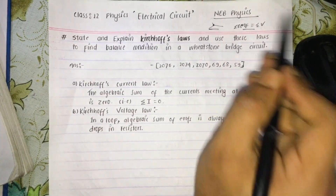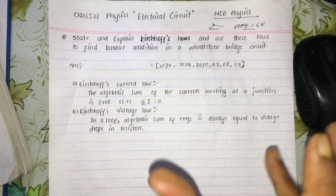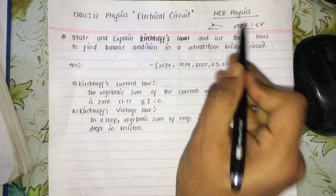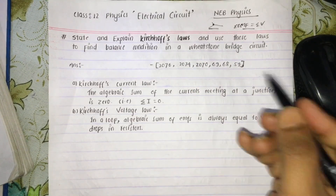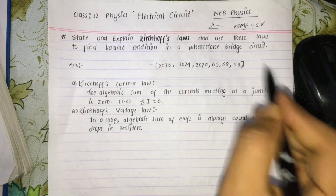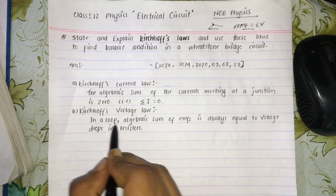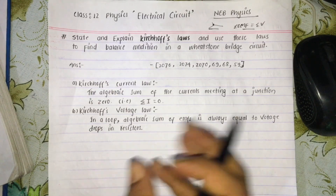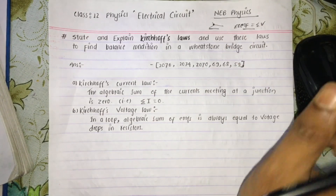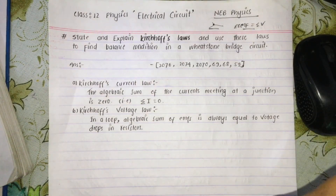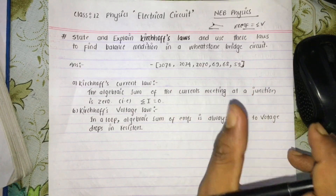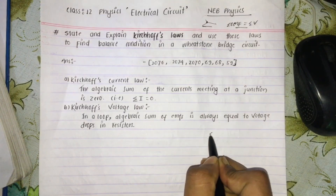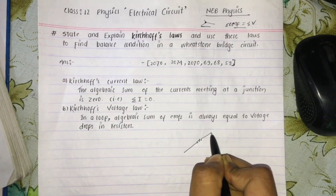The algebraic sum of the currents meeting at a junction should be equal to zero. The algebraic sum of the EMFs in a loop is always equal to the voltage drop across the resistors in that loop. This is used to find the balance condition in the Wheatstone bridge.